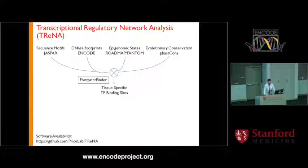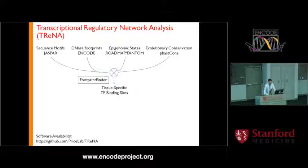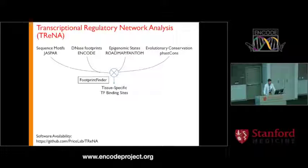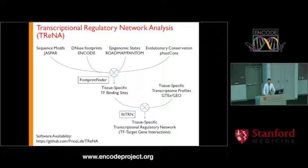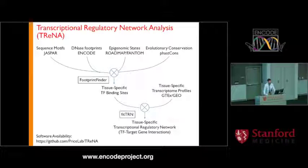The approach we've been taking to reconstruct transcriptional regulatory networks involves using machine learning to integrate many different kinds of data to predict in two different domains. First, we'd like to understand where transcription factors bind in the genome, using information about the motifs they recognize and a variety of chromatin annotations including DNase, enhancer annotations, and evolutionary conservation. We've developed ensemble machine learning approaches to solve these problems.